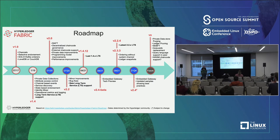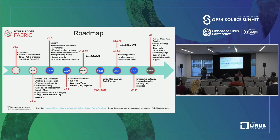We created the notion of channels, which allows us to segment further the network into subgroups, so that within a network you can have different subgroups that intersect in many ways and provide people with more privacy. Some of the big milestones: in 2019 we had the first LTS version — long-term support — where the community committed to maintaining it for at least a year and a half. Then we had version 2.0 in early 2020, with versions 2.1 and 2.2 before we created a new LTS.